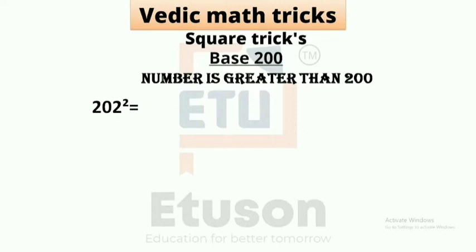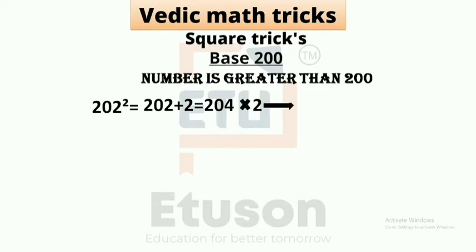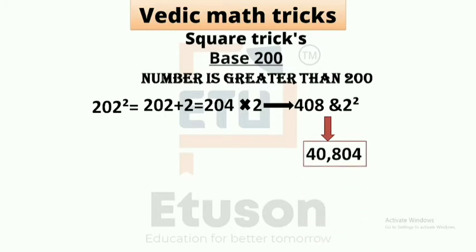202 is how much greater than 200? It is greater by 2. So we add 2 to the number: 202 + 2 = 204. Then multiply by 2, because our base is 200: 204 × 2 = 408. And square the excess number 2: 2² = 04. So the answer is 40804.